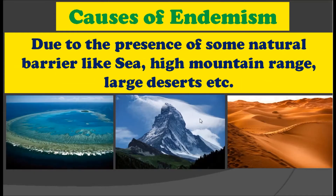Now what are the causes that make a species an endemic species? Why do species become endemic? The first reason is the presence of natural barriers such as seas, high mountain ranges, and large deserts.